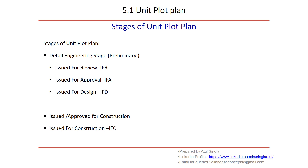Based on whatever information is available, we issue a revision of the unit plot plan which we call 'Issue for Review.' This goes to all other disciplines as well as stakeholders like the client and PMC. They provide their comments, we incorporate all these comments, and we issue it again for approval. By the time we start getting final vendor drawings and P&ID updates, the information becomes much more mature, so we update our unit plot plan and issue it for design.